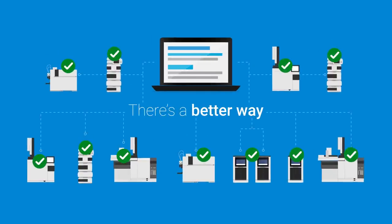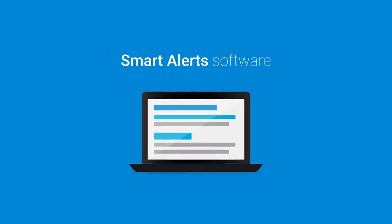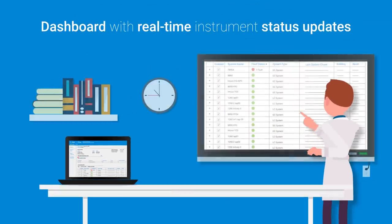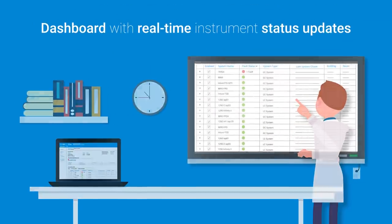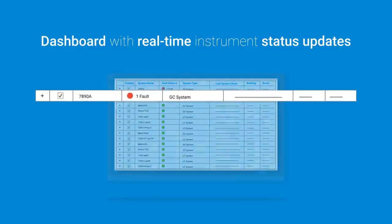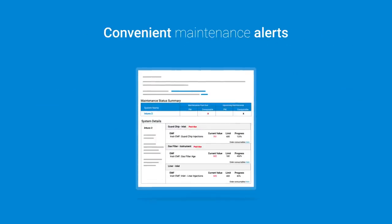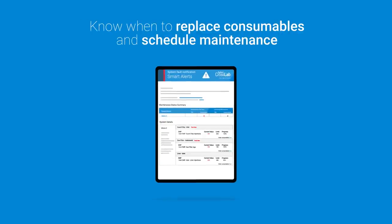There's a better way to keep your instruments running at their peak. Agilent has developed SmartAlert software which monitors the instruments across your lab. It provides a dashboard with real-time instrument status updates and sends convenient maintenance alerts so you know exactly when to replace consumables or schedule preventive maintenance.